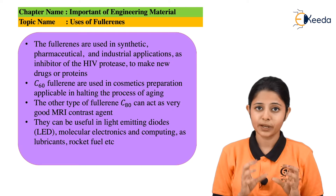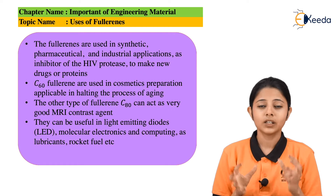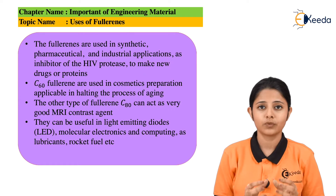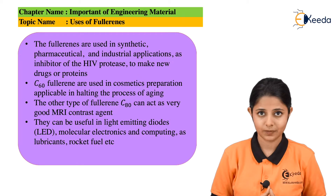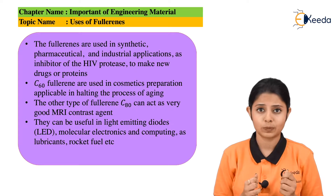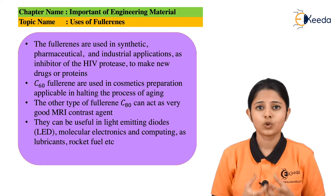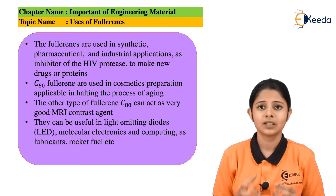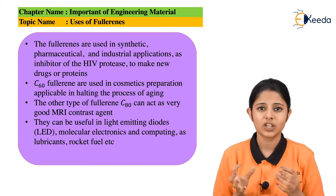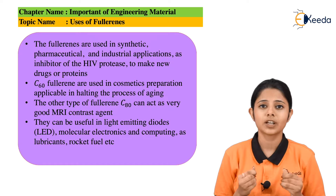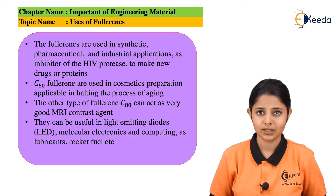Fullerene is made up of carbons and it is also used as a substitute for proteins in many substances. It is also being used in many cosmetics. C60 Fullerene is used as a filler in many cosmetics, meaning it is used in cosmetic materials which add glow to the face and improve the texture of the face.